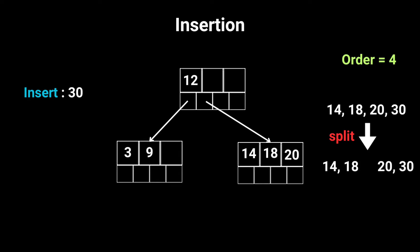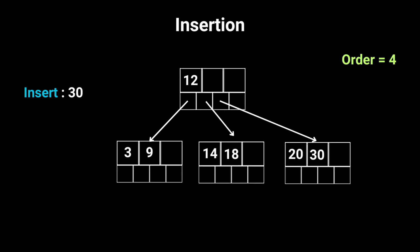14, 18 in one node, and 20, 30 in the new node. This new node will contain 20 and 30. Here's the important part. You need to add 20 to the root node because now it links three children, and the number of keys is one less than the number of children.